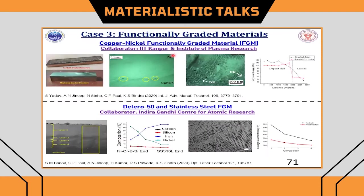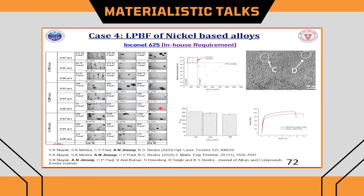A collaboration with IIT Kanpur and IPR produced a Hopper N9 FGM, and another FGM of Deloro 50 and stainless steel. In powder bed fusion, we developed the Inconel 625 process window — varying laser power, scanning speed, and hatch spacing to develop a dense process for the material, then characterizing it properly.